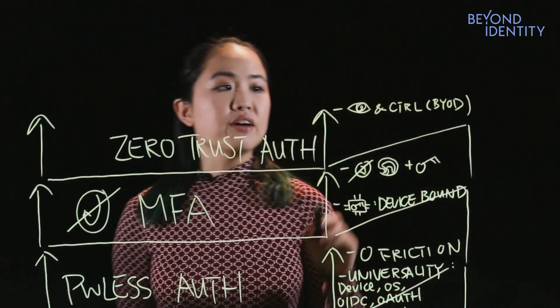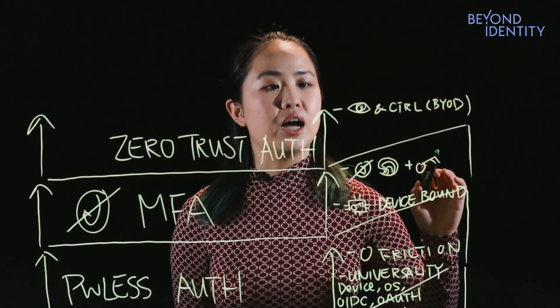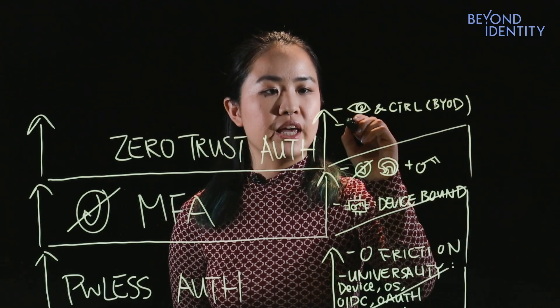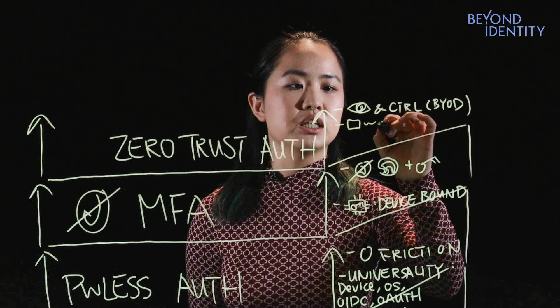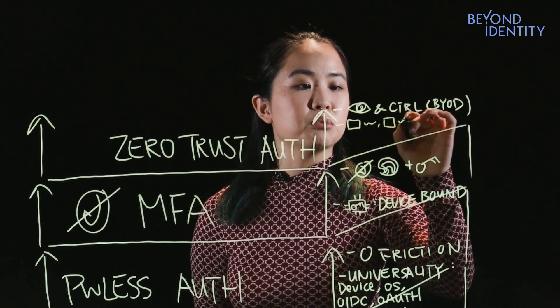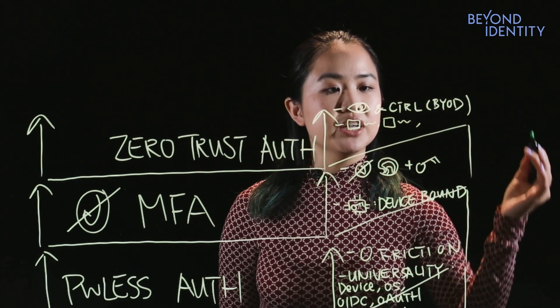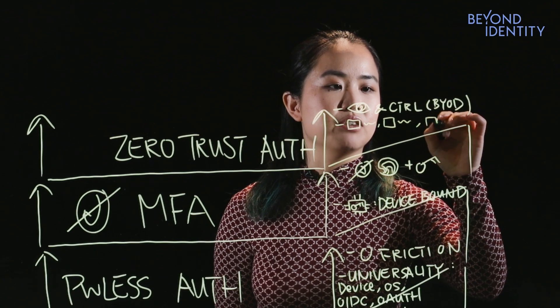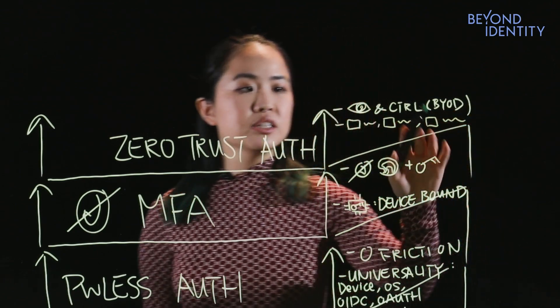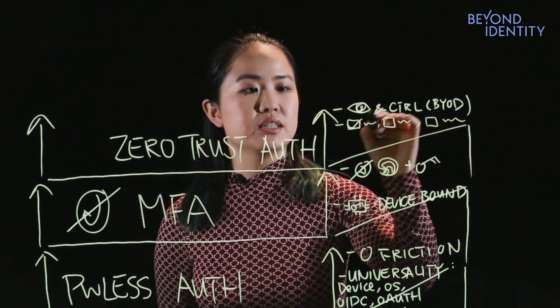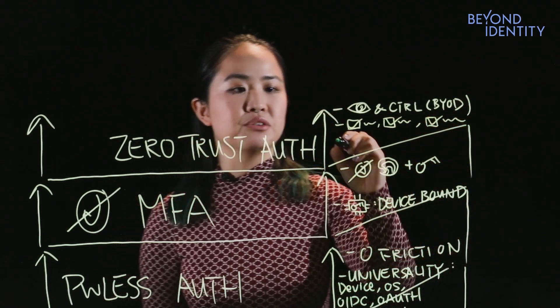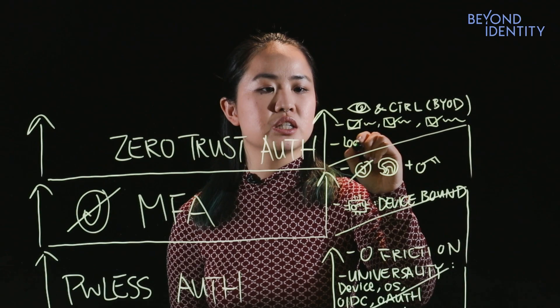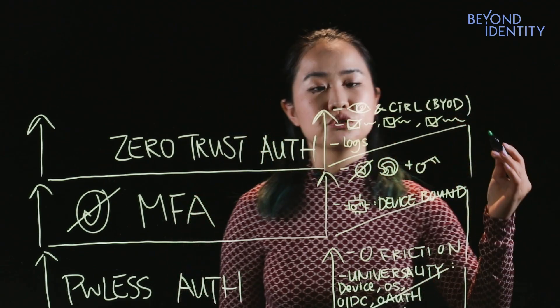So every authentication request that Beyond Identity does, we're also performing a security check. So is the firewall turned on? Is the biometric enabled? Are the MDMs configured and active on this device? Every device that authenticates must pass these real time device security checks in order to gain access. And of course, we give you the logs that are immutable to prove this.